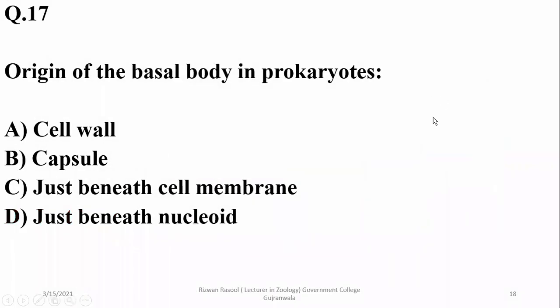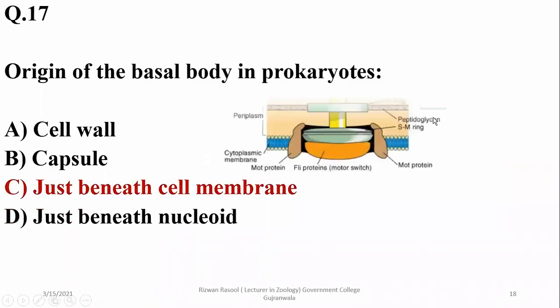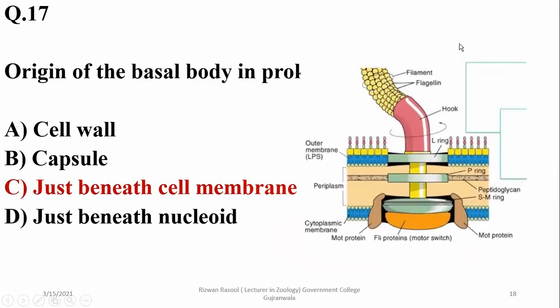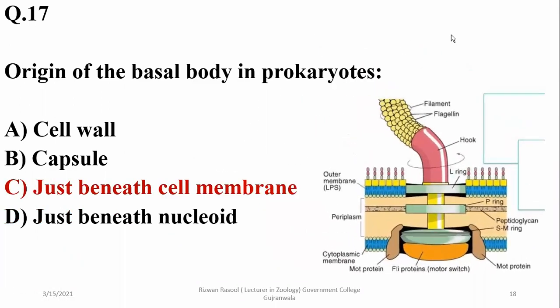The origin of the basal body in prokaryotes is just beneath the cell membrane — it lies in the cytoplasm, beneath the cell membrane or cytoplasmic membrane.